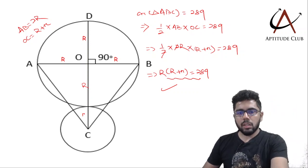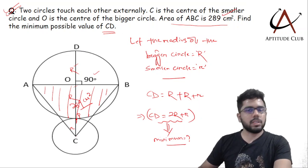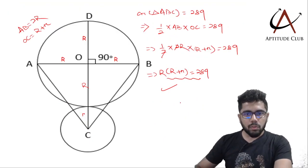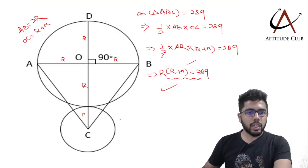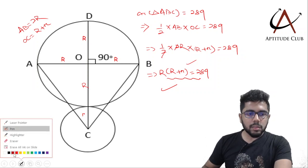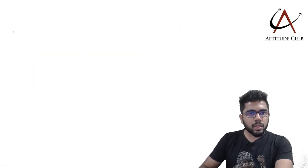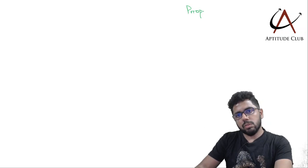We got this result, but our objective is to minimize 2R plus r. So how do we get there? Once we have this result with us, how do we proceed? There is this interesting property that we are going to use.